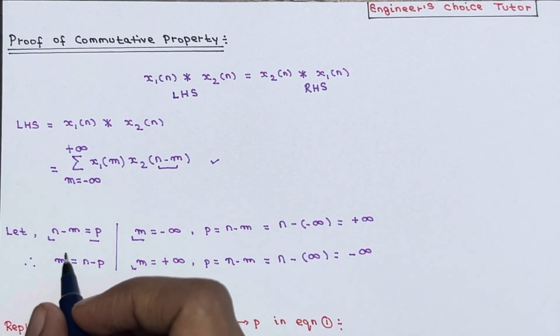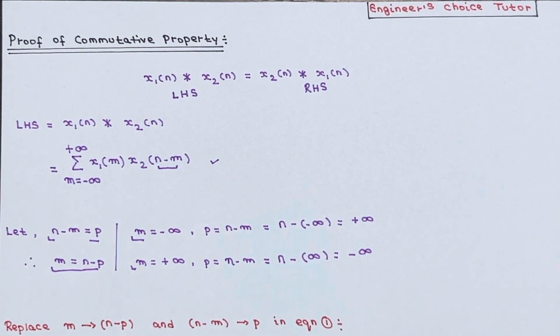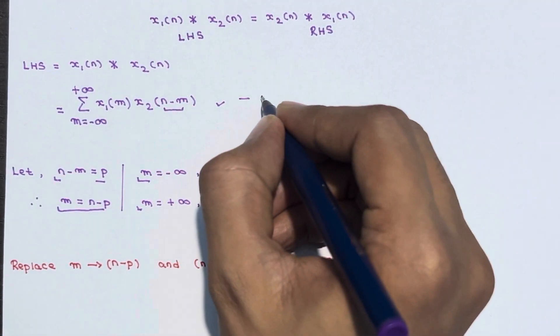And one more thing. If n minus m equals p, so m equals n minus p. So you have to remember this also. So basically now what we have to do? This is equation number one.